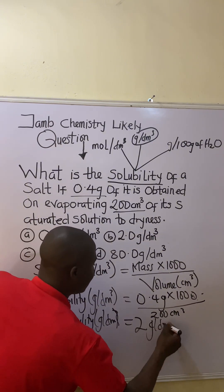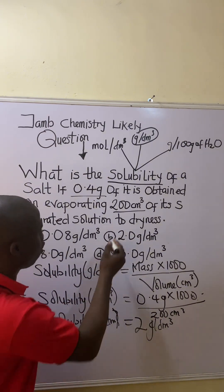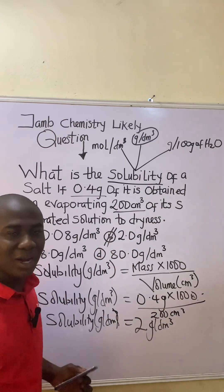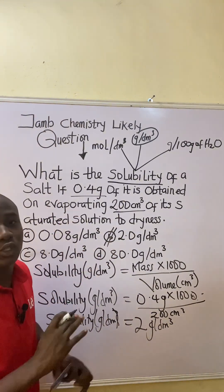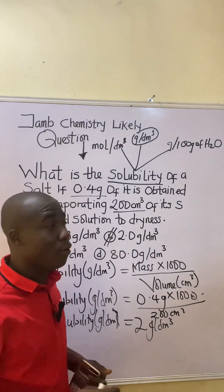So we are getting the solubility in grams per dm³ to be 2.0 grams per dm³, and that will go to option B. I believe you can now solve questions on this aspect.